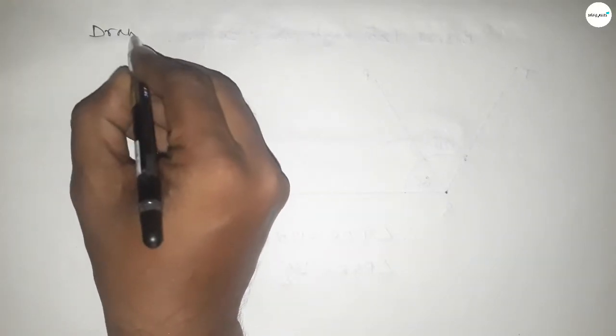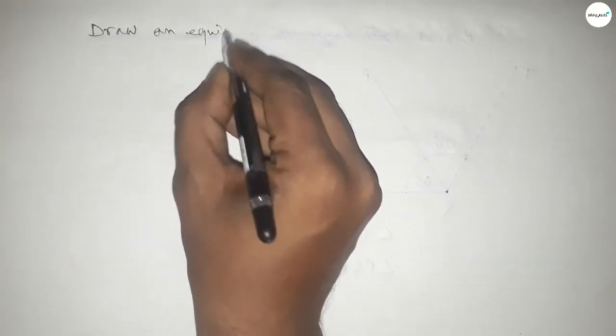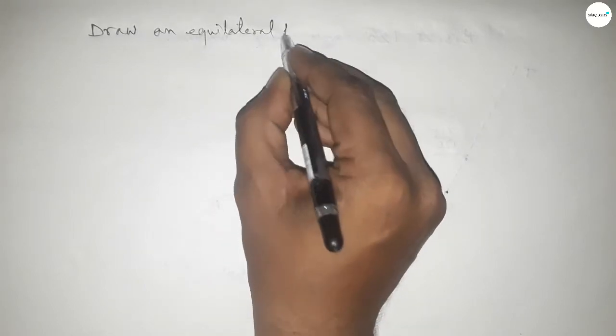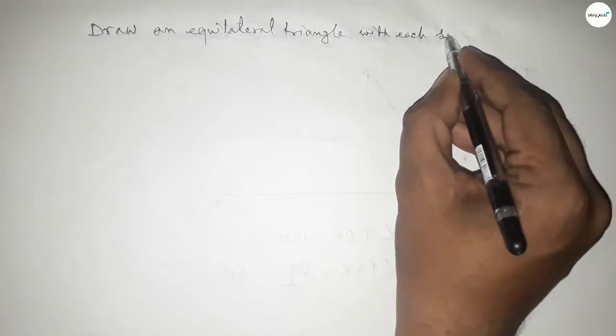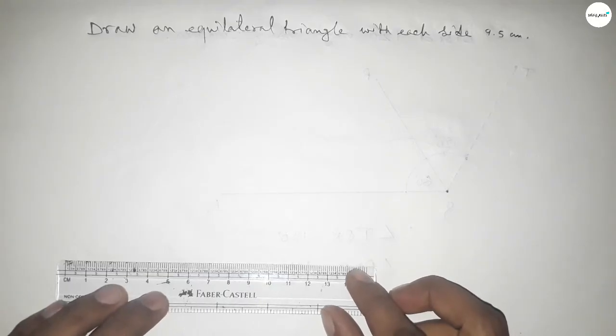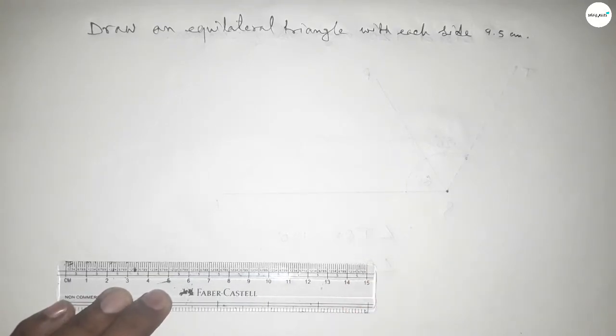Hi everyone, welcome to SSR classes. Today in this video we have to draw an equilateral triangle with each side 9.5 centimeter. So let's start the video. First of all we have to draw here a line of length 9.5 centimeter.